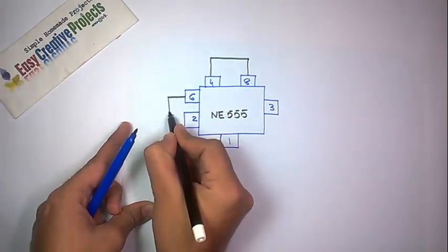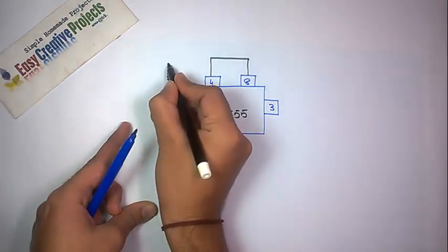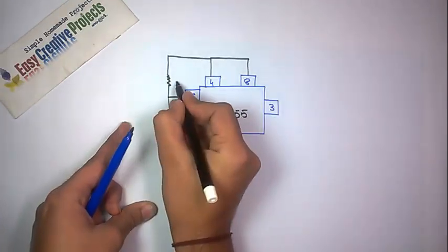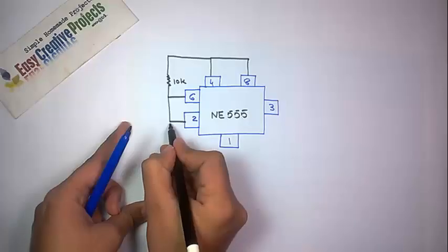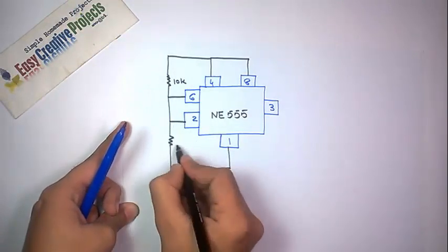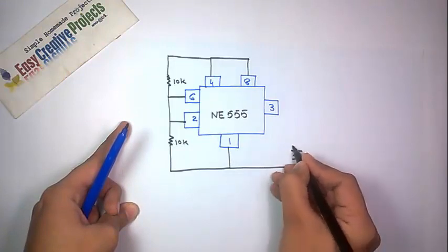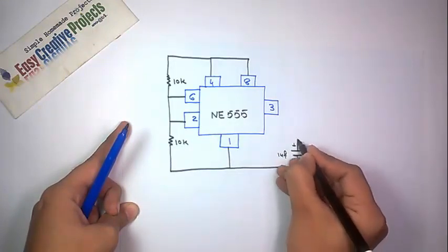Connect pin 6 with pin 2. Now connect a 10K resistor between pin 6 and pin 4. Connect another 10K resistor between pin 2 and pin 1.